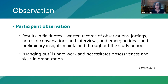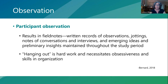Participant observation typically results in field notes — written records of observations. These initially take the form of jottings, brief snippets of what we're observing, which then get extended into longer field notes. They include notes of conversations and informal interviews in the field, and that's where we start recording emerging ideas and preliminary insights, tracking how those insights shift throughout the study. Participant observation is about hanging out, but hanging out is hard work — it necessitates obsessiveness in skills and organization because you're taking in so much information.